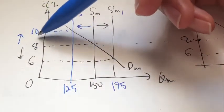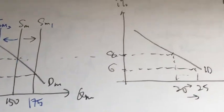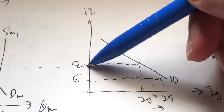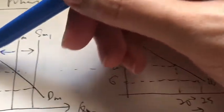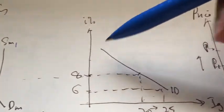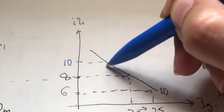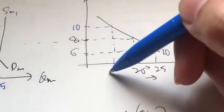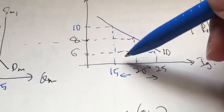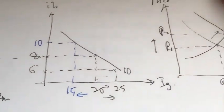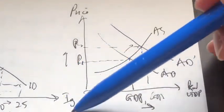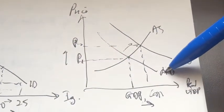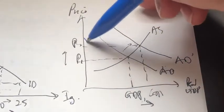When interest rate increases, the cost of borrowing becomes more expensive. Looking at the investment demand curve — previously interest rate was at 8%, now it's 10%. The amount of investment has also fallen because it's more expensive to borrow. The amount of IG falls. When IG falls, aggregate demand will also fall, meaning the AD curve will shift to the left.